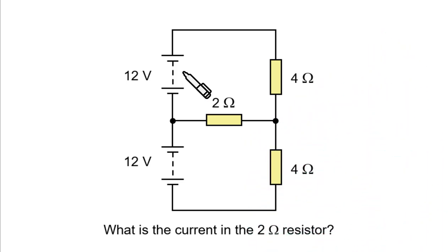Okay, I think it's pretty obvious that there's a current going this way through this resistor, thanks to this 12-volt battery here. And it's also obvious that a current will be going this way through this 4 ohm because of this battery here.